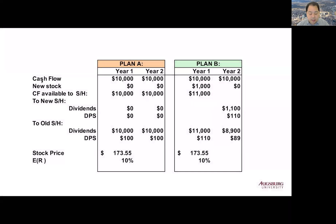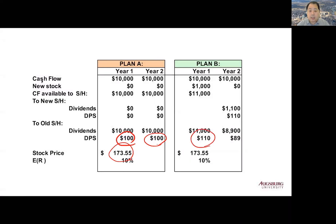Both plans generate the same stock price. The first plan generates a $100 dividend each year, so the present value is $173.55. With the second plan, in year one the dividend per share is $110, and in year two only $89 dividend per share, since $110 dividend will be paid to new shareholders. The present value is the same: $173.55. So in theory, the dividend itself does not change firm value.